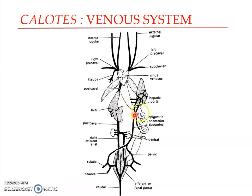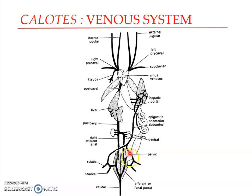The venous system also includes two portal systems: the hepatic portal system and the renal portal system. The renal portal system is formed as follows: you can see a caudal vein which drains blood from the tail. After it enters the body, it bifurcates into two renal portal veins which enter the kidneys. From each renal portal vein arises a pelvic vein. Each pelvic vein receives blood from the hind limbs through the femoral and sciatic veins.